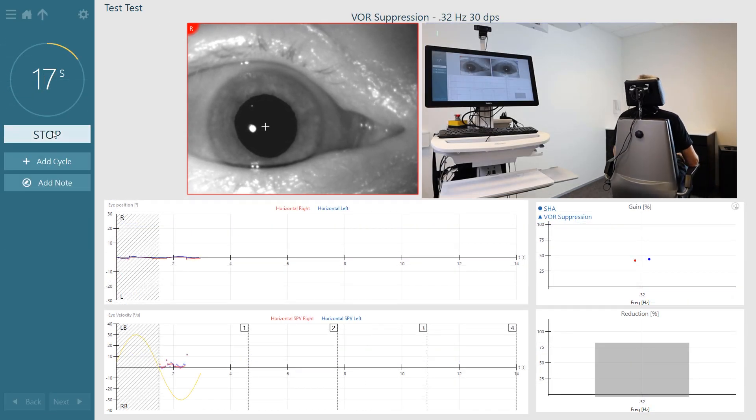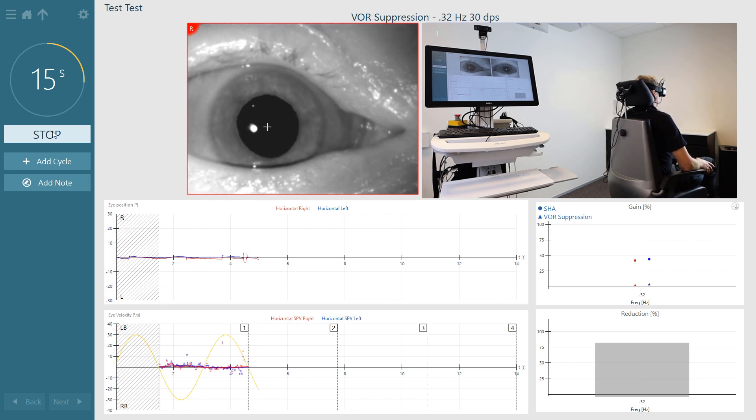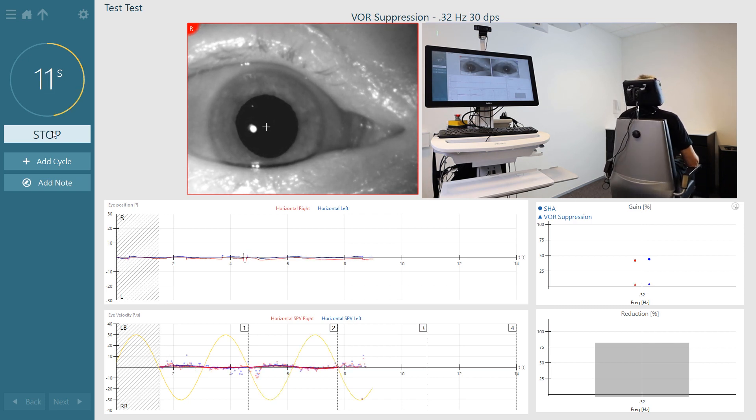In conclusion, VOR suppression testing can be used to test the central vestibular pathways and allows the clinician to see the patient's VOR suppression performance across multiple sinusoidal harmonic acceleration frequencies.